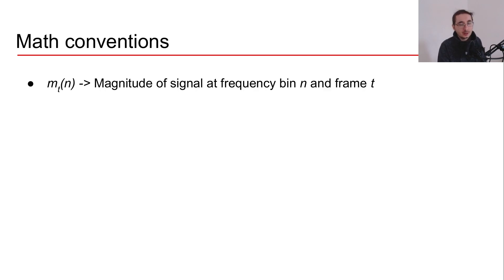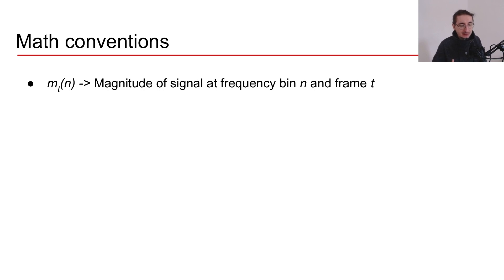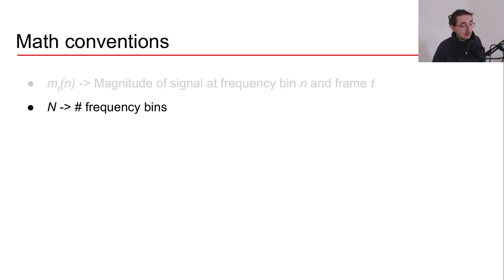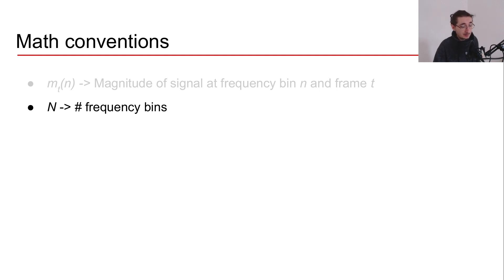I want to share a couple of math conventions we'll be using. M(T, N) stands for the magnitude of the signal at a given frequency bin N and at a given frame T. Capital N equals the number of frequency bins in the spectrogram.